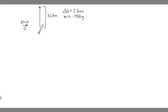In this problem, we're told a 0.145 kg baseball pitched horizontally at 32 meters per second strikes a bat and is popped straight up to a height of 36.5 meters. If the contact time between the bat and the ball is 2.5 milliseconds, calculate the average force between the ball and the bat during contact.